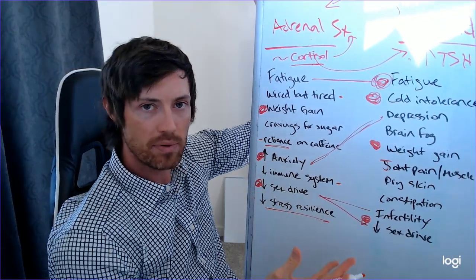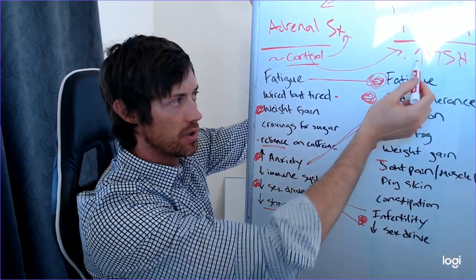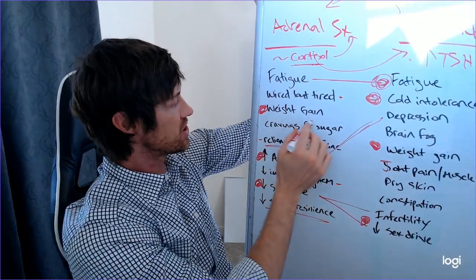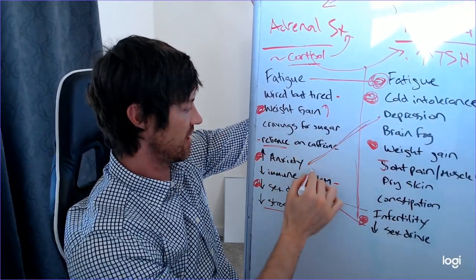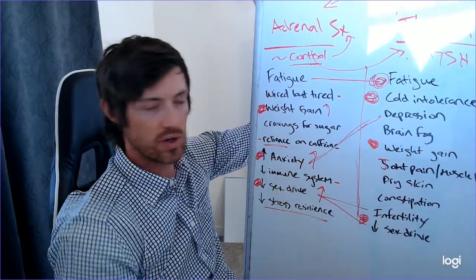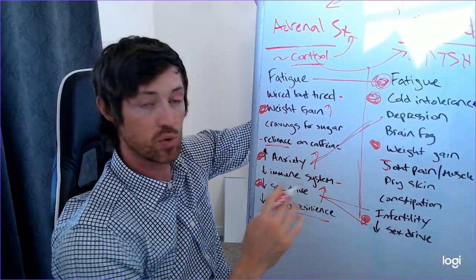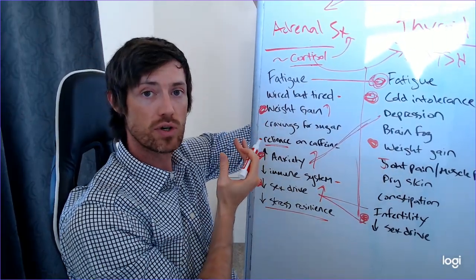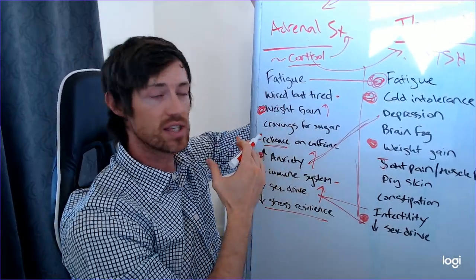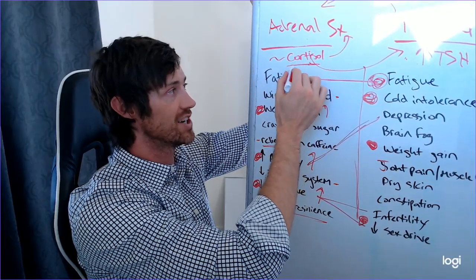So what will happen to these people is they'll start taking therapies to treat their thyroid, but these symptoms might reduce over here, but they still have weight gain. They still have anxiety and they still have decreased sex drive. So they're still suffering from symptoms which they may attribute to their thyroid, but which are coming from their adrenals. And the only way to get rid of these things is to actually treat your adrenals and to treat your cortisol.